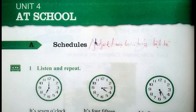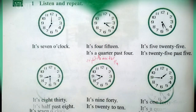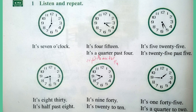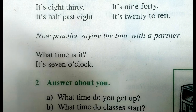Unit 4: At School. A. Schedules. Listen and repeat, page 44. It's 7 o'clock. It's 4.15 — it's quarter past four. It's 5.25 — it's 25 past five. It's 8.30 — it's half past eight. It's 9.40 — it's 20 to 10. It's 1.45 — it's quarter to two. Now practice saying the time with a partner. What time is it? It's 7 o'clock.